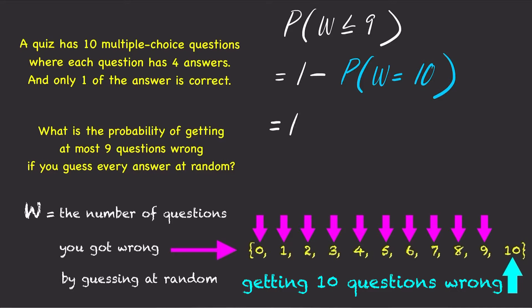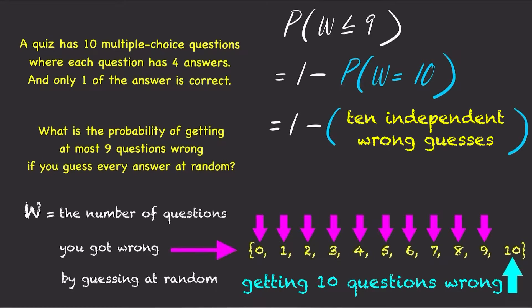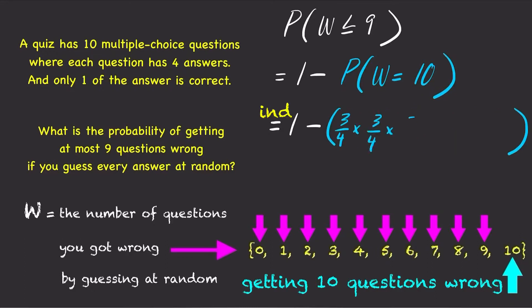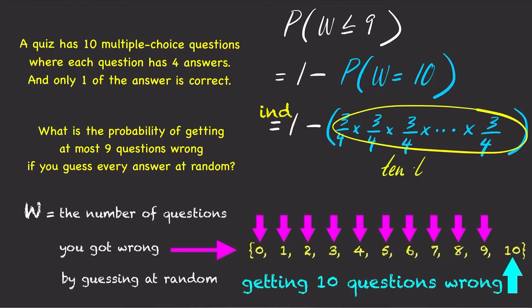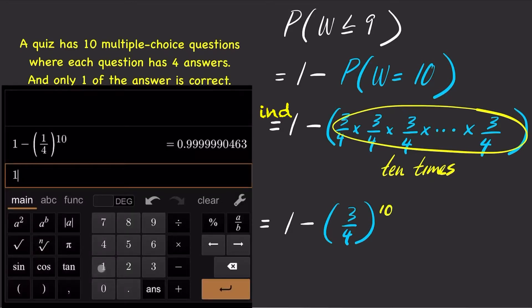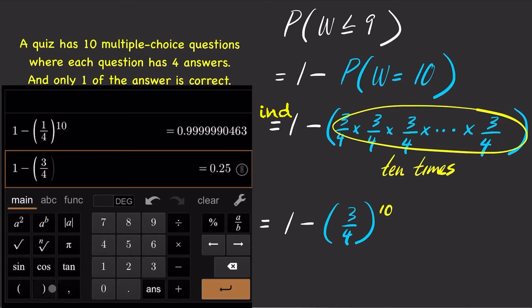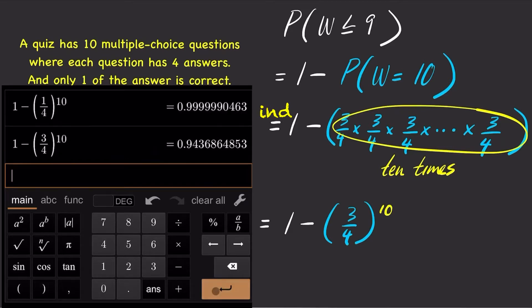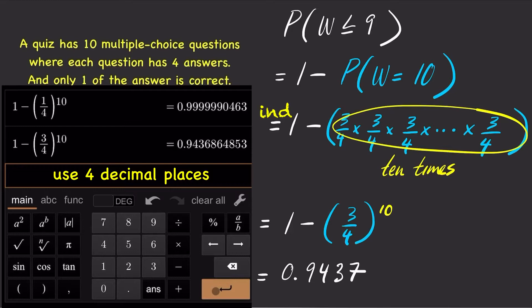But you guess at random 10 times, and each guess is independent of all other guesses. So, by the multiplication rule, that's 3/4 times itself 10 times, which is 3/4 to the 10th power. Now plug this into your calculator: 1 minus 3/4 to the 10th power. And the answer is 94.37%.